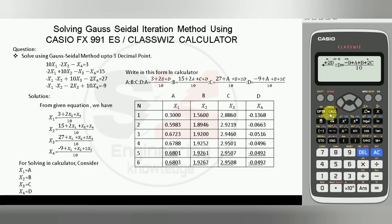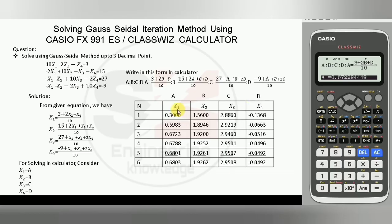After entering the expressions, press the Calc button. For solving the Gauss-Seidel iteration method, the initial values for variables x1, x2, x3, and x4 will be 0. So first we type 0 for A, then equal, 0 for B, then equal, 0 for C, then equal, 0 for D, then equal. This sets all initial variable values to zero.